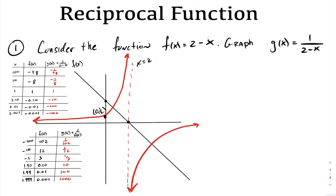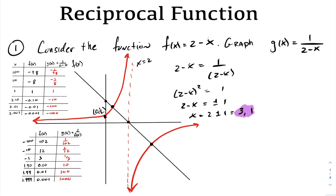We can do further analysis on the graphs of g(x) and f(x) by finding where they intersect. Setting f(x) equal to g(x) and solving, the functions intersect when x is 3 and x is 1. Finding the corresponding y values, f(x) and g(x) intersect at the points (3, 1) and (1, 1).